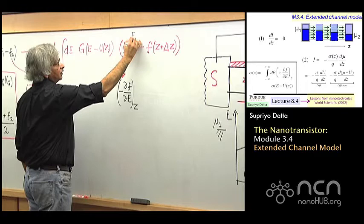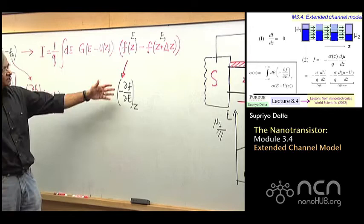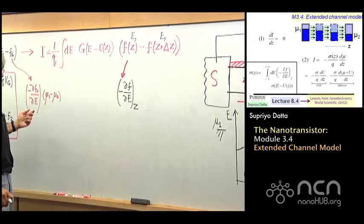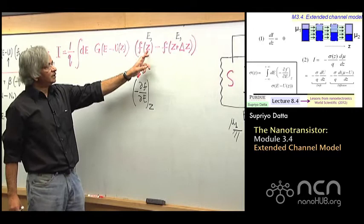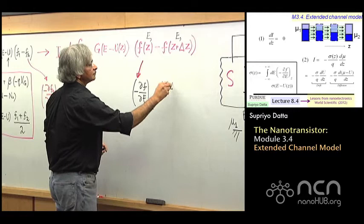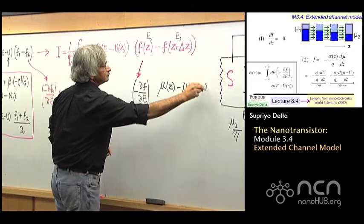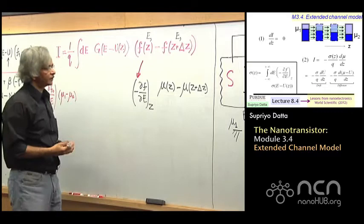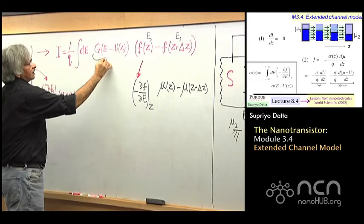As you remember, this is really a function of E comma Z, and this is E comma Z plus delta Z. So this is dF/dE at that location times the difference between mu — the electrochemical potential at Z — and the electrochemical potential at Z plus delta Z, so you have mu of Z minus mu of Z plus delta Z.